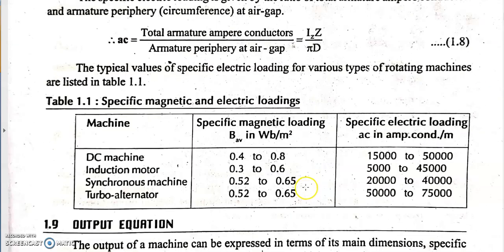The typical values for specific magnetic loading B_average range from 0.4 to 0.8 webers per meter square, and for specific electric loading AC the range is 15,000 to 50,000 ampere conductors per meter.